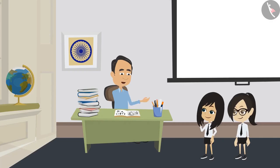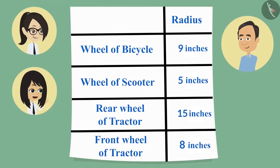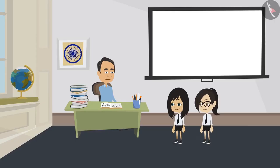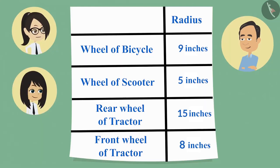Then let us see whatever you have measured. Here you are, sir. Yes, your measurements look right. Which wheel had the largest circle? The rear wheel of the tractor had the largest circle.